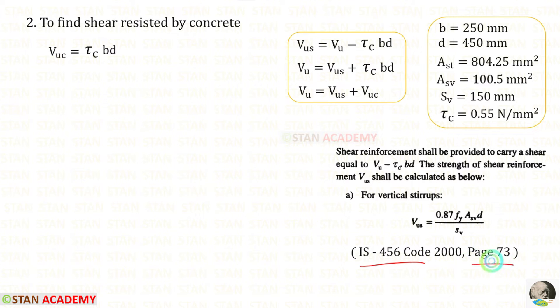Now, we have to take the page number 73. In page number 73, VUS formula is given as VU minus τc bd. VUS is the shear resisted by the shear reinforcement, in this question, that is the strength by vertical stirrups. We can take τc bd on the other side, it will come as positive. We can keep τc bd as VUC, which is the shear resisted by concrete. First, let us find VUC. We know that is τc bd. Let us apply the values of τc and bd. For VUC, we will get this. We can divide this by 1000 so that we will get the value in kN.